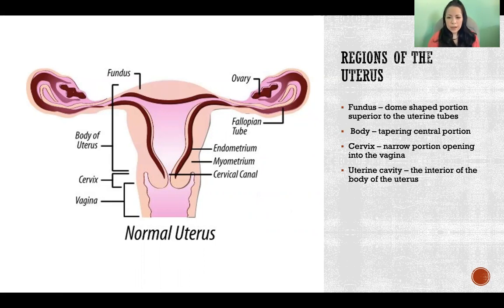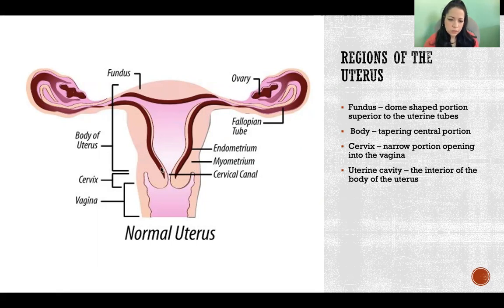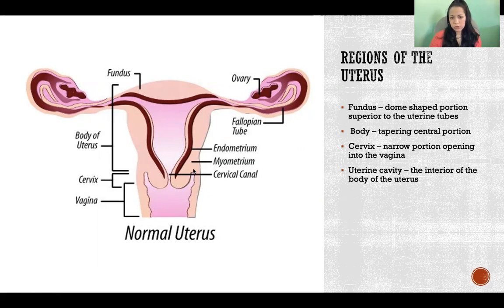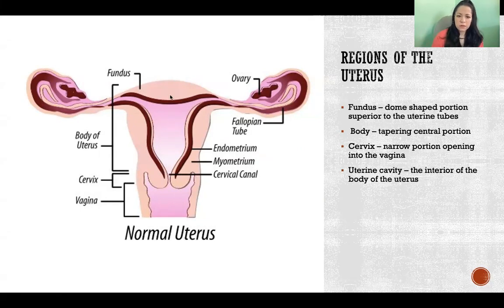The body is the tapering central portion — that's this whole part of the uterus here. The cervix is the very small, narrow portion at the most inferior part, where the uterus attaches to the vagina. The vagina is here, and the cervix comes down inside of the vagina. The vagina comes up and wraps around and attaches to the outside like that. The uterine cavity is simply referring to the empty space inside of the uterus.